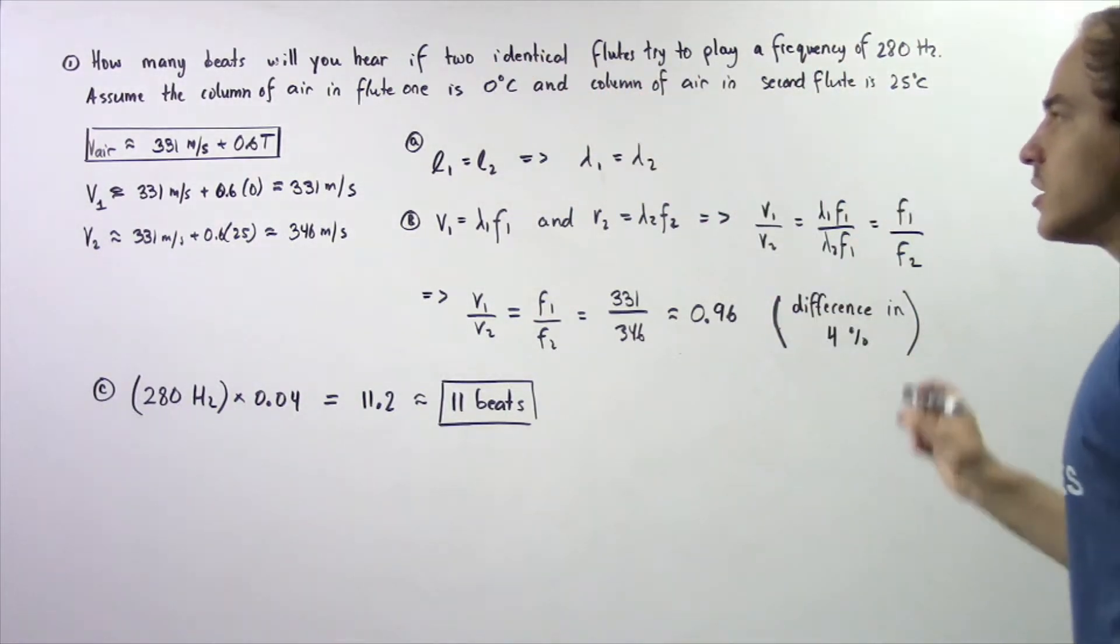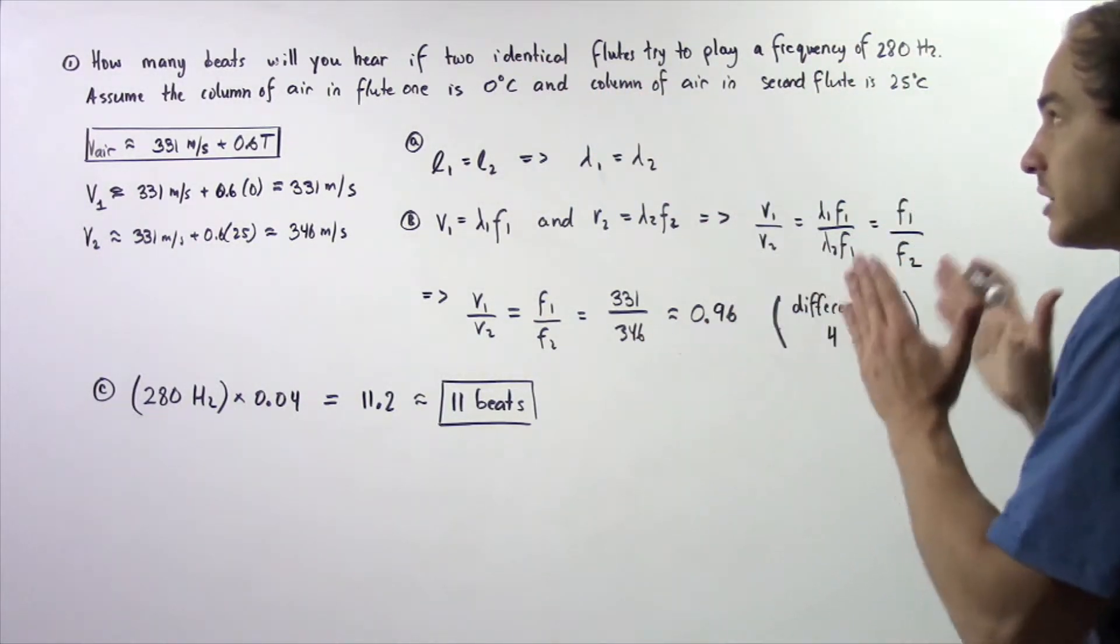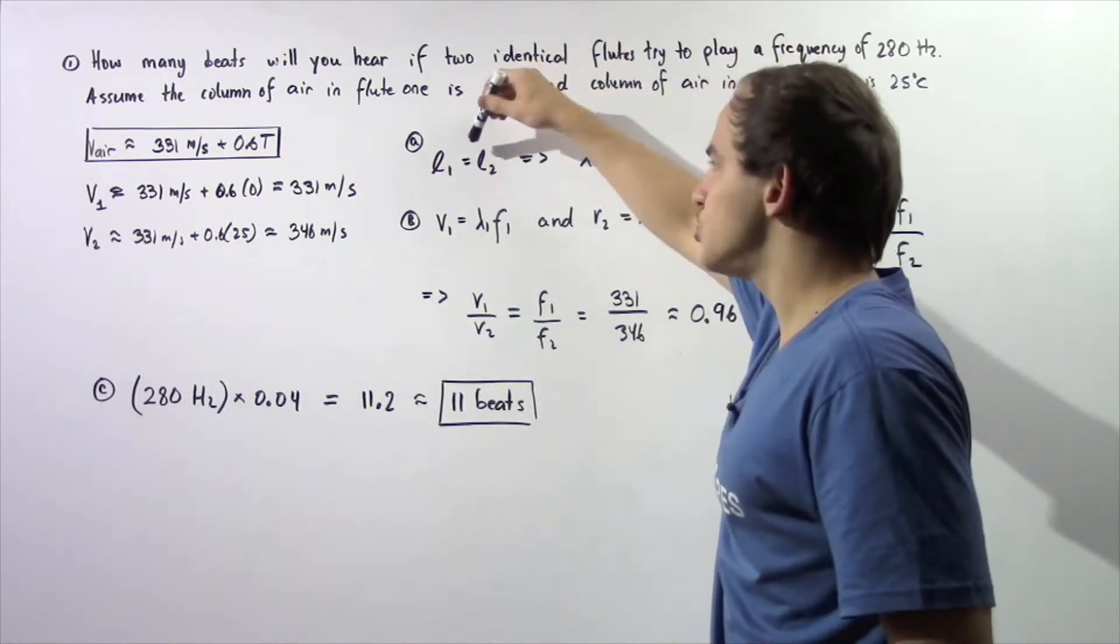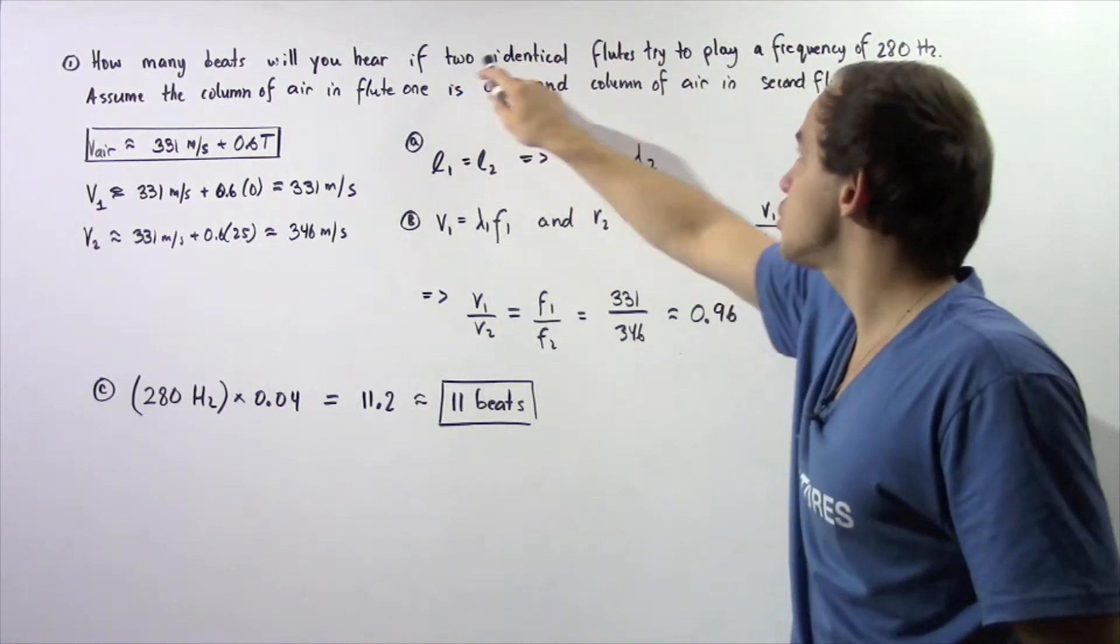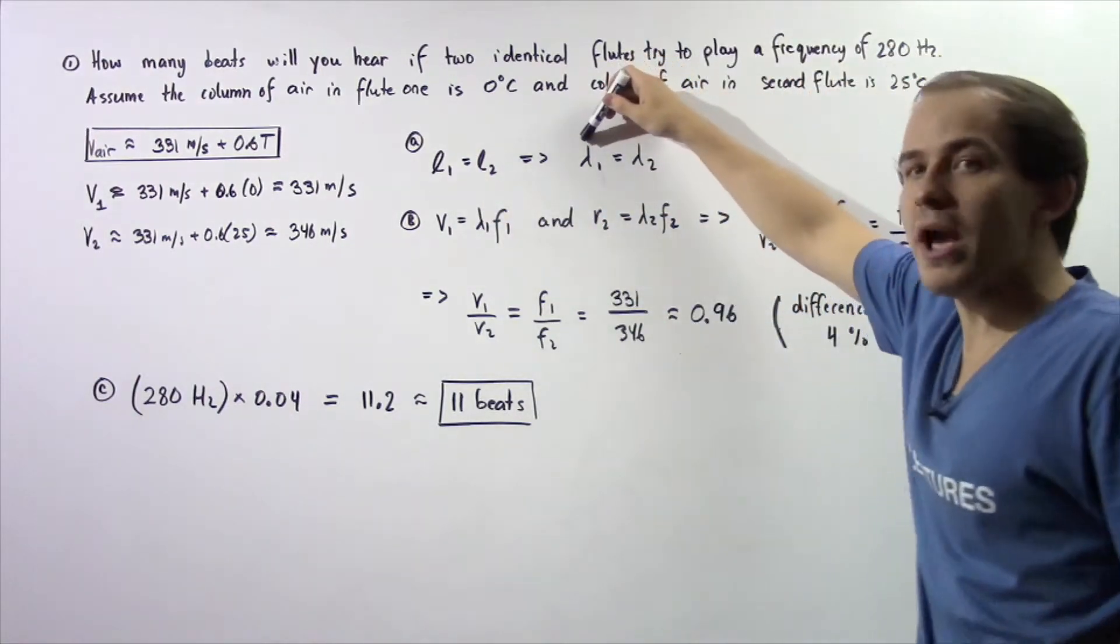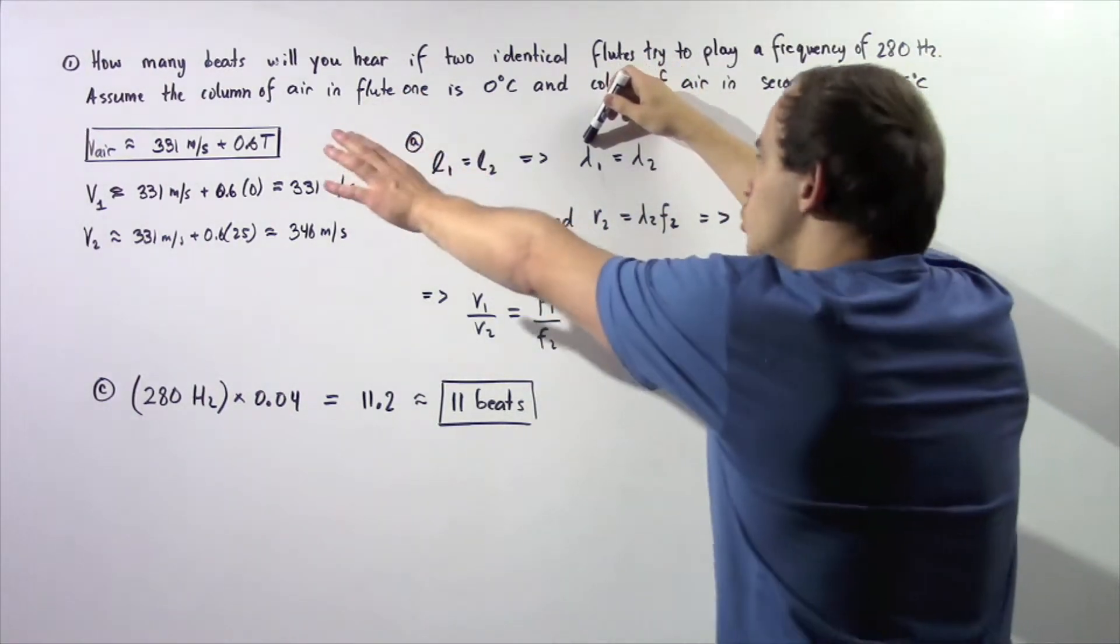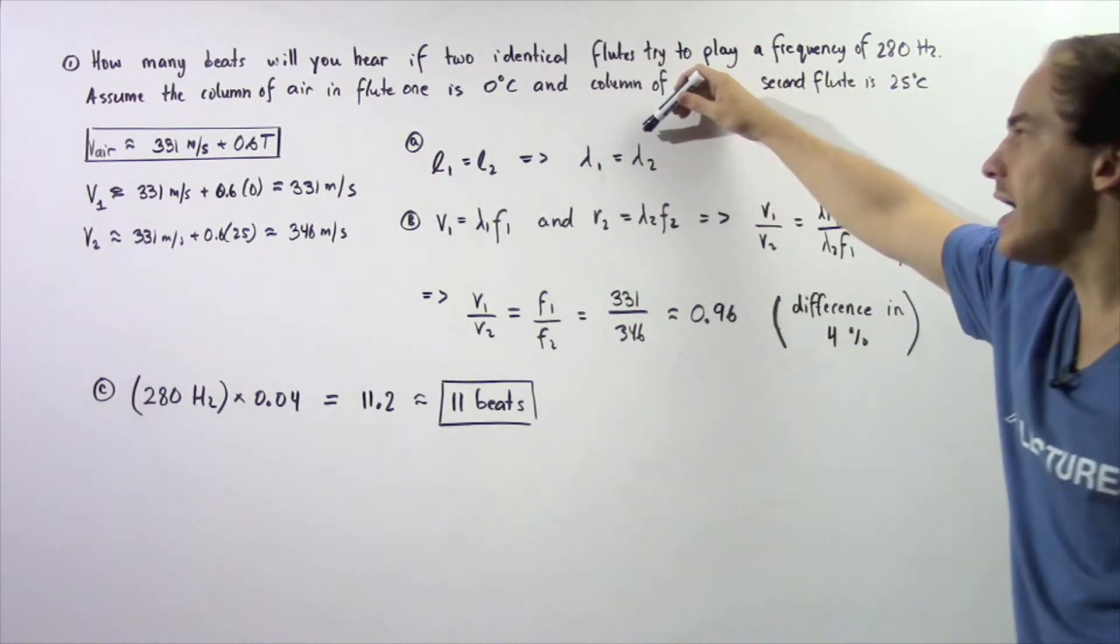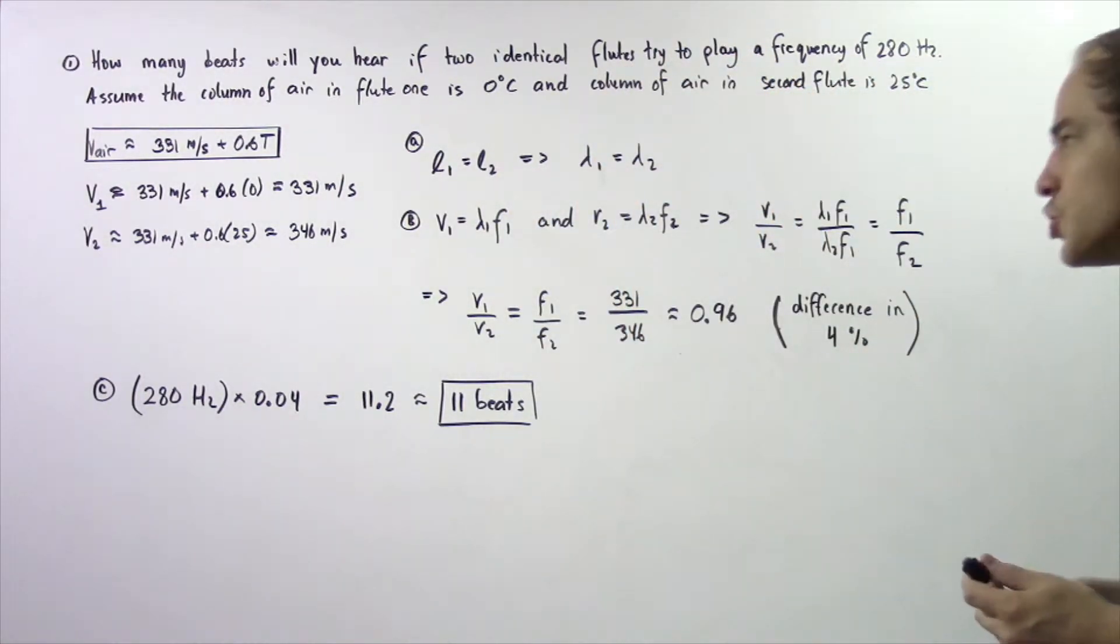that means the length of the pipes, the length of the flutes, L1 will equal L2. That's because they're identical. And that implies that the wavelength in flute one will be the same as the wavelength in flute number two.